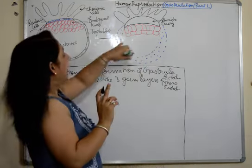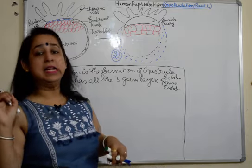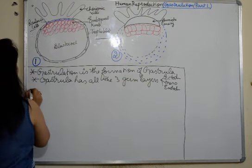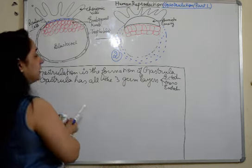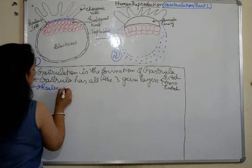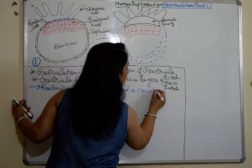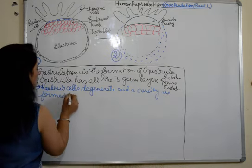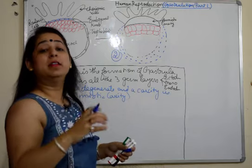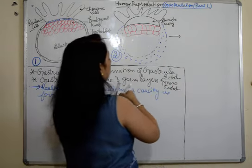To summarize the first change: the embryonal knob arranges itself in a disc-like pattern where cells become elongated and get layered up. Where the Rauber cells were, they degenerate and the amniotic cavity forms, which will be filled with amniotic fluid and the embryo will develop inside it.